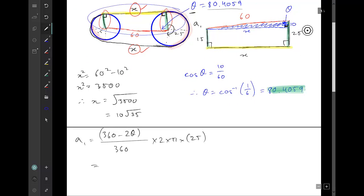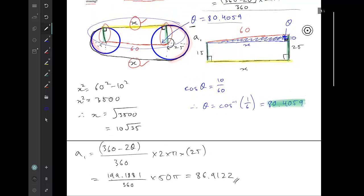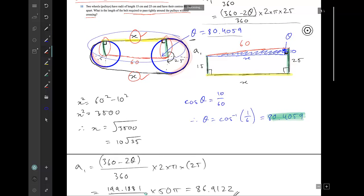So I've got a1 equals 360 minus 2 theta on 360 times 2 times pi times 25. Now 360 minus 2 theta, just put that into your calculator, we've got our value of theta and what we end up with is 199.1881 on 360 times 50 pi which gives us approximately 86.9122. Again for the moment I'm keeping it to four decimal places or at least four decimal places.